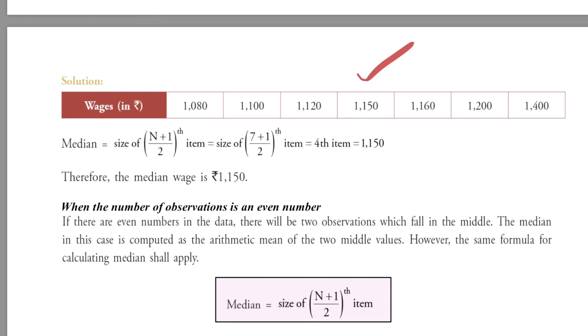So 7 plus 1 upon 2 is equal to 8 upon 2, that is 4th item, and 4th item is rupees 1150. Therefore, median wages is equal to rupees 1150.